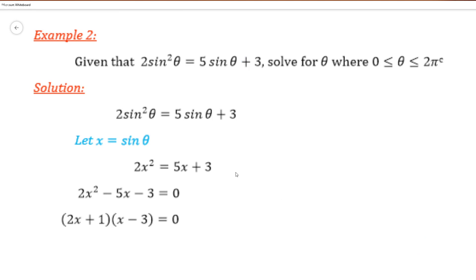Example 2: given that 2 sine squared theta minus 5 sine theta plus 3 equal 0, solve for theta where theta is between 0 and 2 pi radians. We let x equal sine theta, giving us 2x squared equal 5x plus 3. Getting 0 on the right-hand side gives 2x squared minus 5x minus 3 equal 0. This can be factorized to give 2x plus 1 and x minus 3 equal 0.